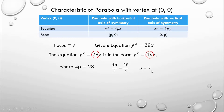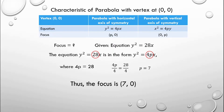Since p is equal to 7, and the formula used is y squared is equal to 4px, the ordered pair for the focus is p, 0. So the answer is 7, 0. The answer is letter B.